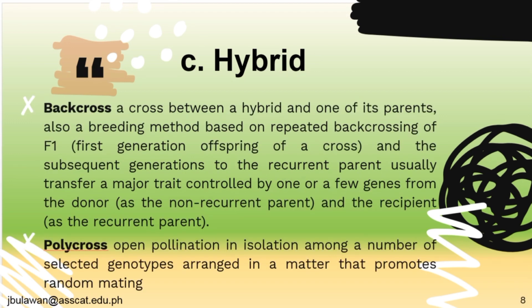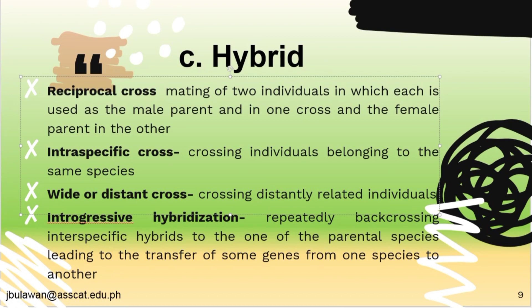For the backcross, it is a cross between a hybrid and one of its parents, also a breeding method based on repeated backcrossing of F1 — the first generation offspring of a cross — and subsequent generations to the recurrent parent. It is used to transfer a major trait controlled by one or a few genes from the donor as the non-recurrent parent to the recipient as the recurrent parent. The polycross is open pollination in isolation among a number of selected genotypes arranged to promote random matings. The reciprocal cross is the mating of two individuals where each is used as the male parent in one cross and the female parent in the other.